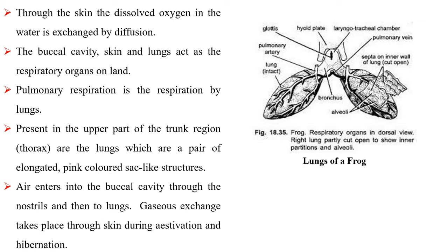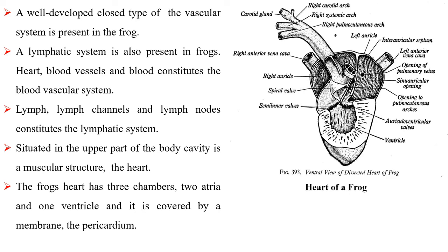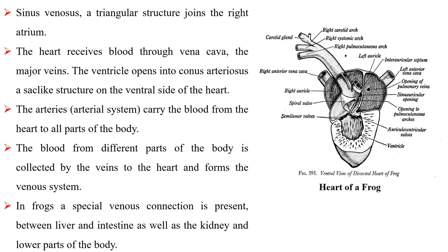A well-developed closed type of vascular system is present in the frog. A lymphatic system is also present in the frog. Heart, blood vessels and blood constitute the blood vascular system. Lymph, lymph channels and lymph nodes constitute the lymphatic system. Situated in the upper part of the body cavity is a muscular structure, the heart. The frog's heart has three chambers: two atria and one ventricle, and it is covered by a membrane, the pericardium.